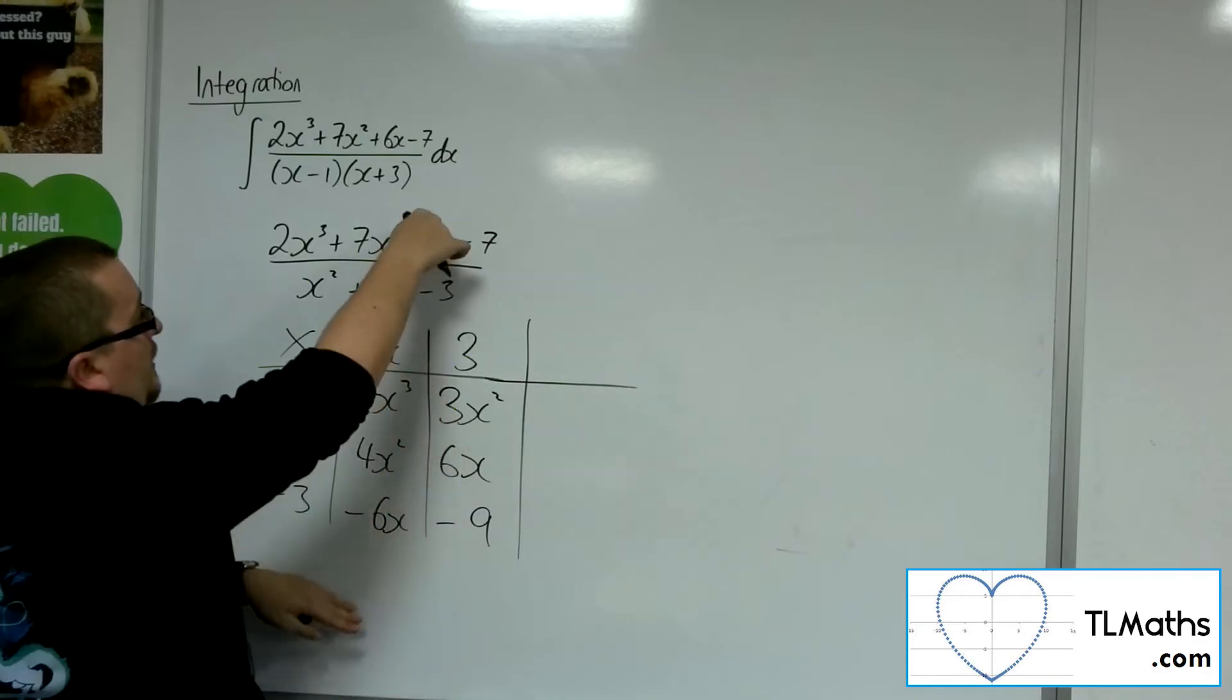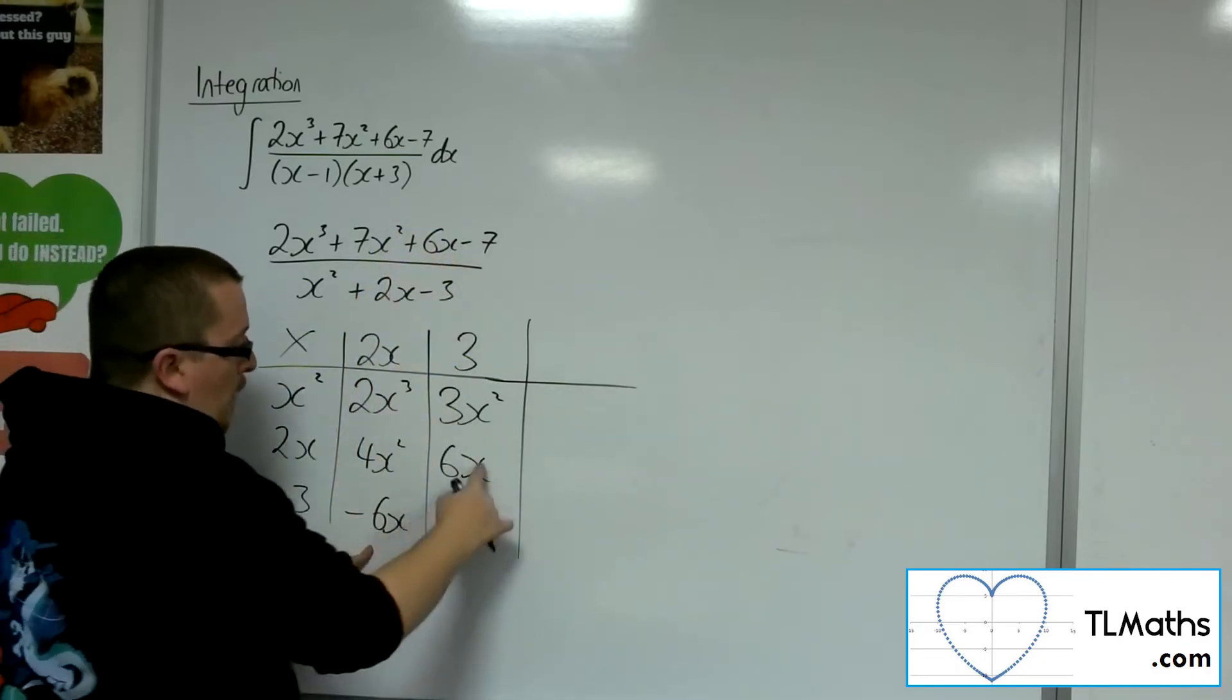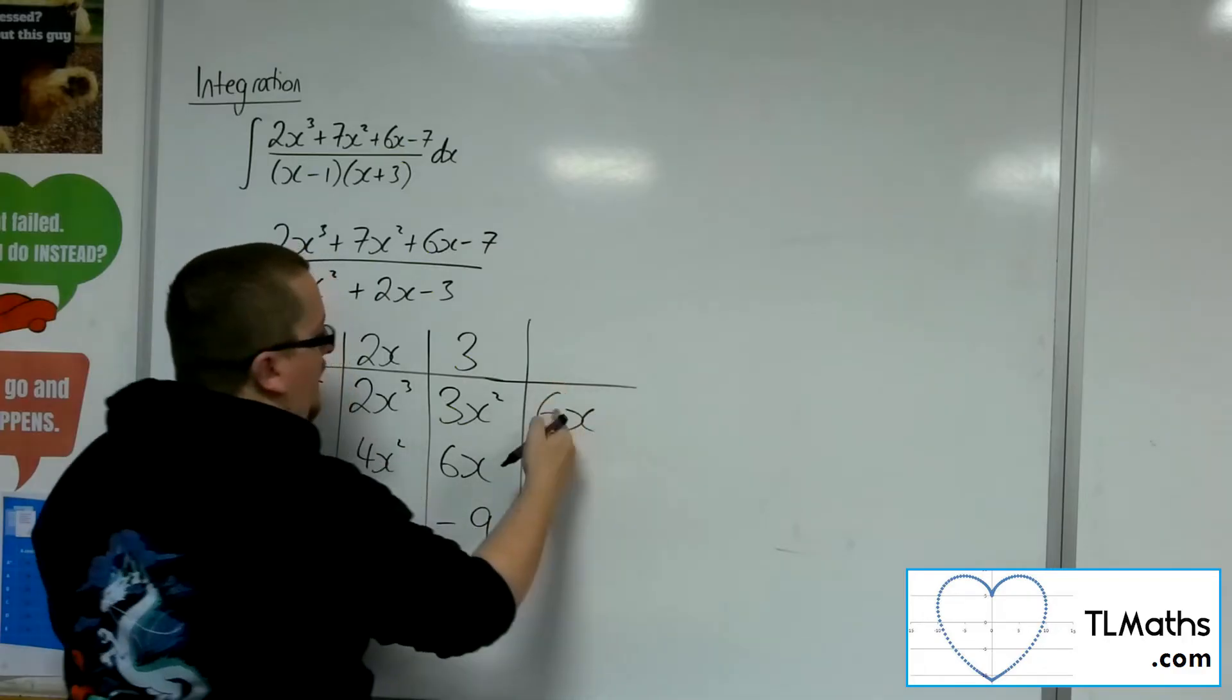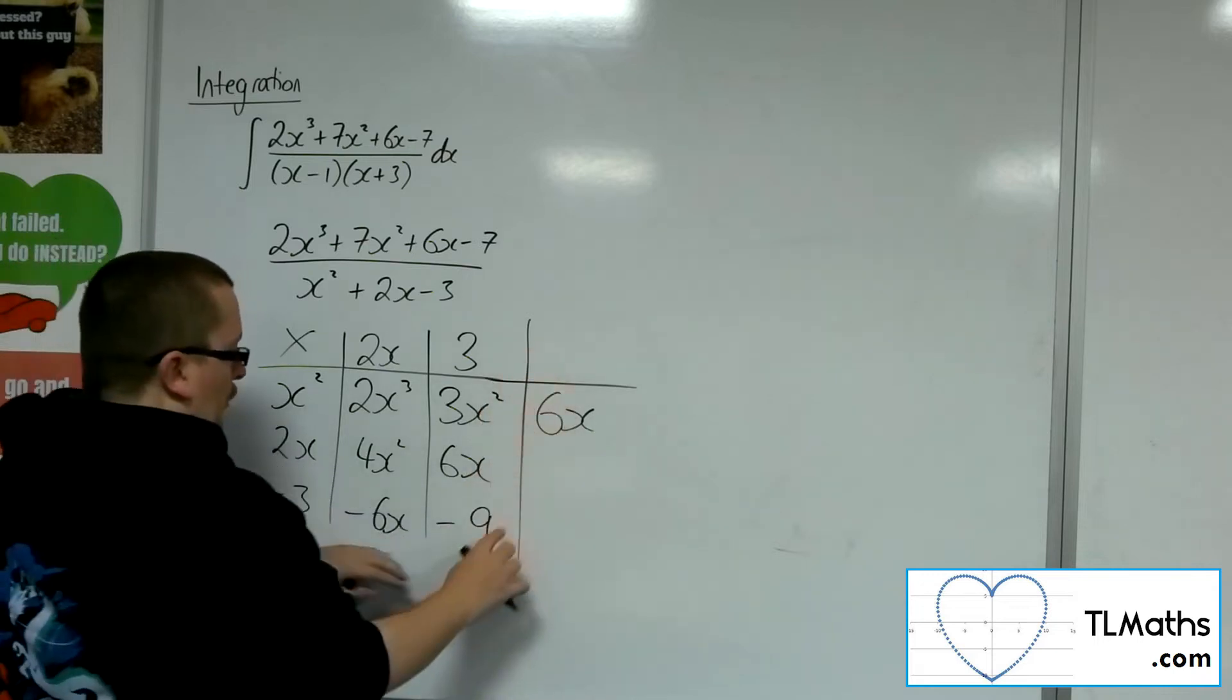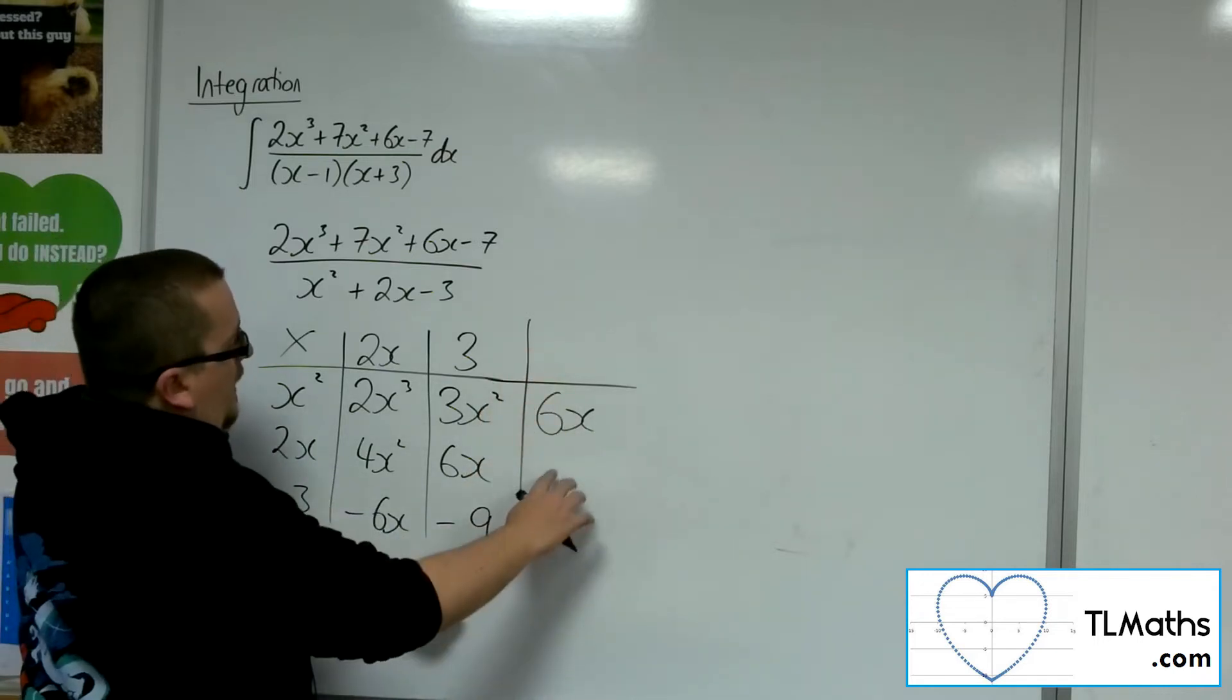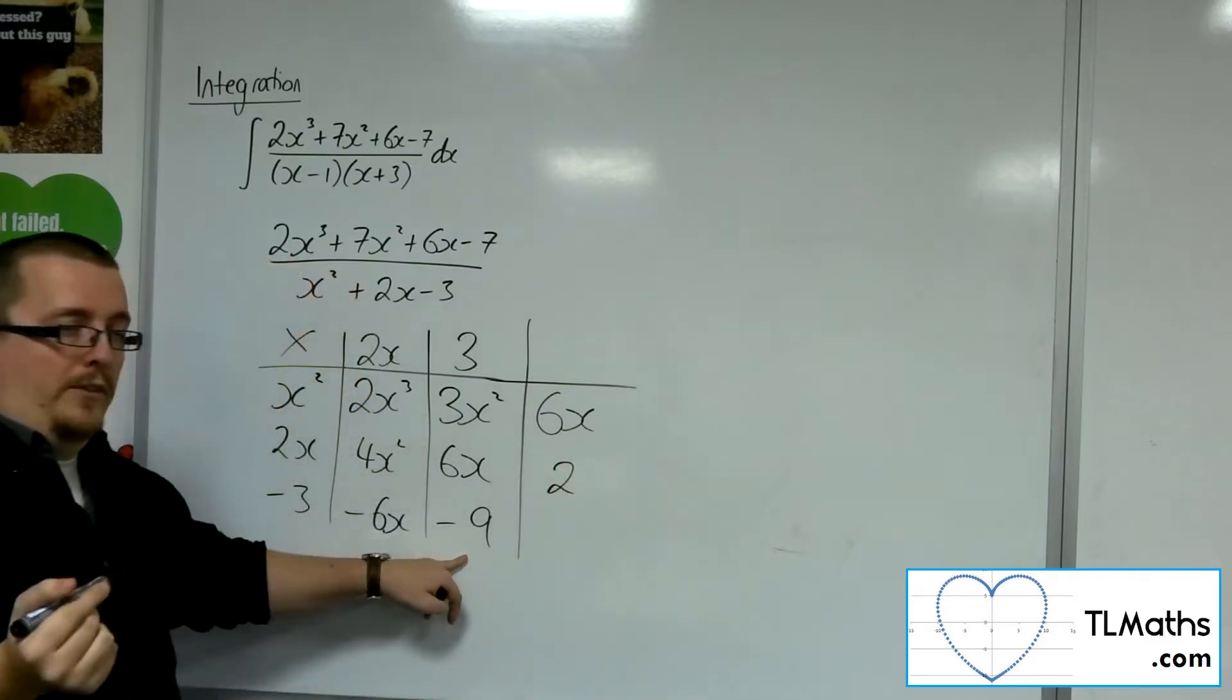Now, I need 6x. I've got minus 6x and 6x, which is 0x. So I'm going to need another 6x in order for those 3 to add up to 6x. So I'm also going to need minus 9. I need minus 7, so I'm going to add 2. So it's 6x plus 2 there.